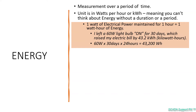As an example, I left a 60 watt light bulb on for 30 days, which raised my electrical bill by 43.2 kilowatt hours. That's 60 watts multiplied by 30 days multiplied by 24 hours in a day, which gives us 43,200 watt hours or simply 43.2 kilowatt hours.